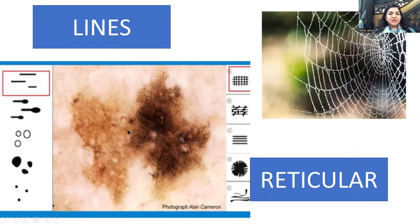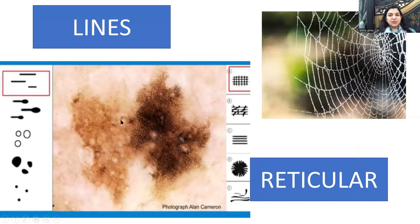Reticular lines form a network, visible in both nevus and melanoma. This picture shows melanoma — there is a network on the left and right side. However, the network is atypical: a typical network is similar throughout the lesion, but here it is lighter in color on the left, with smaller holes, versus darker color and bigger holes on the right. The line thickness also varies throughout. All these features point to an atypical network qualifying for a melanoma diagnosis.